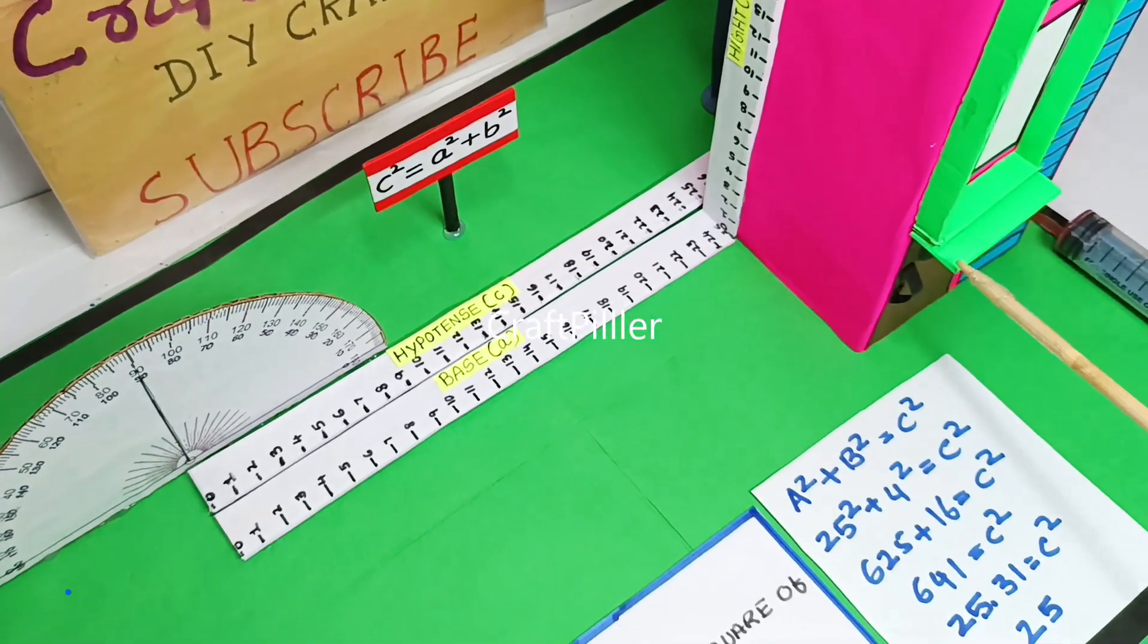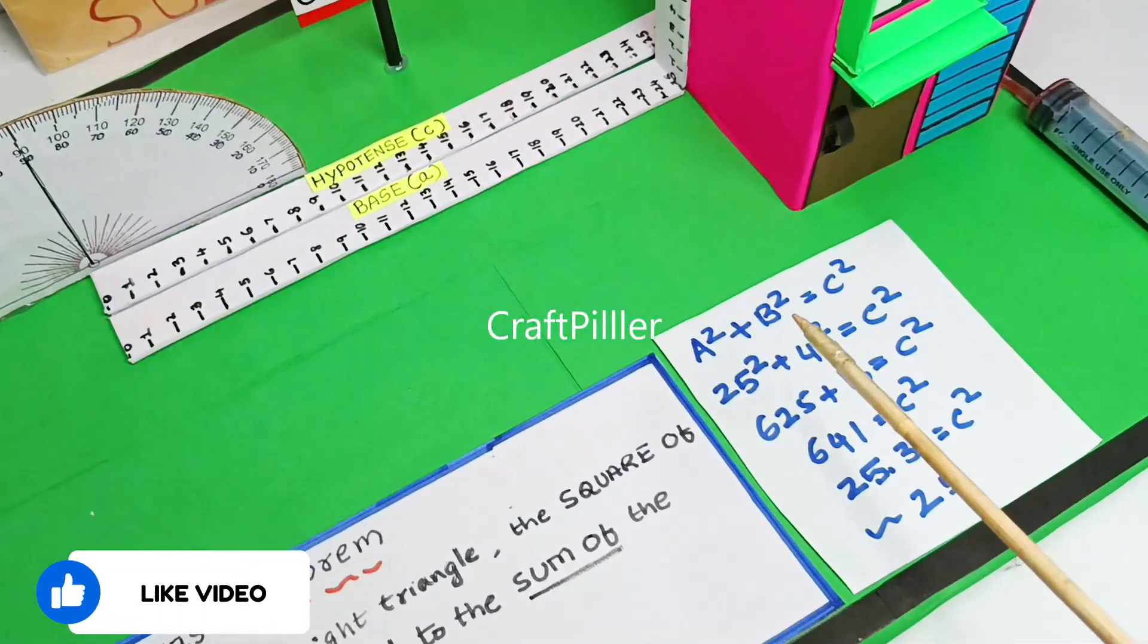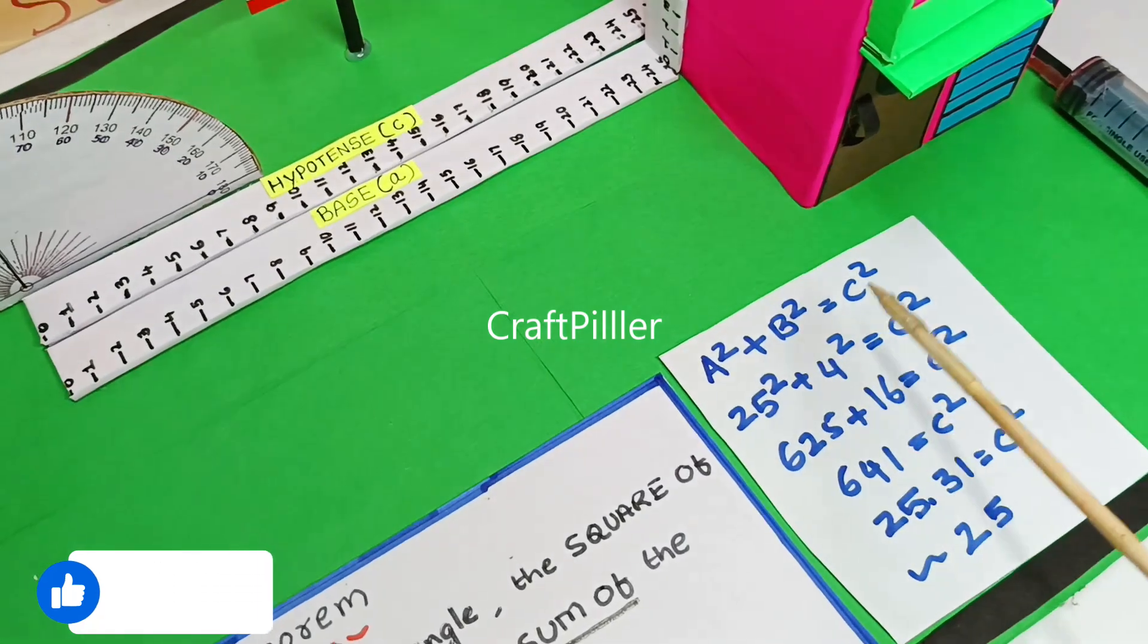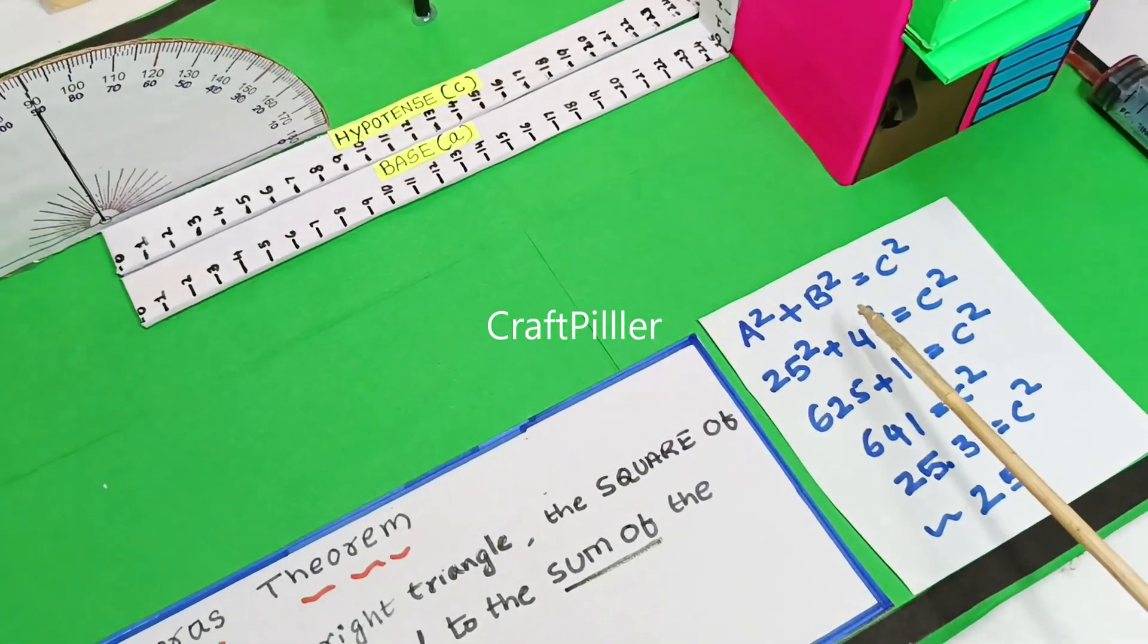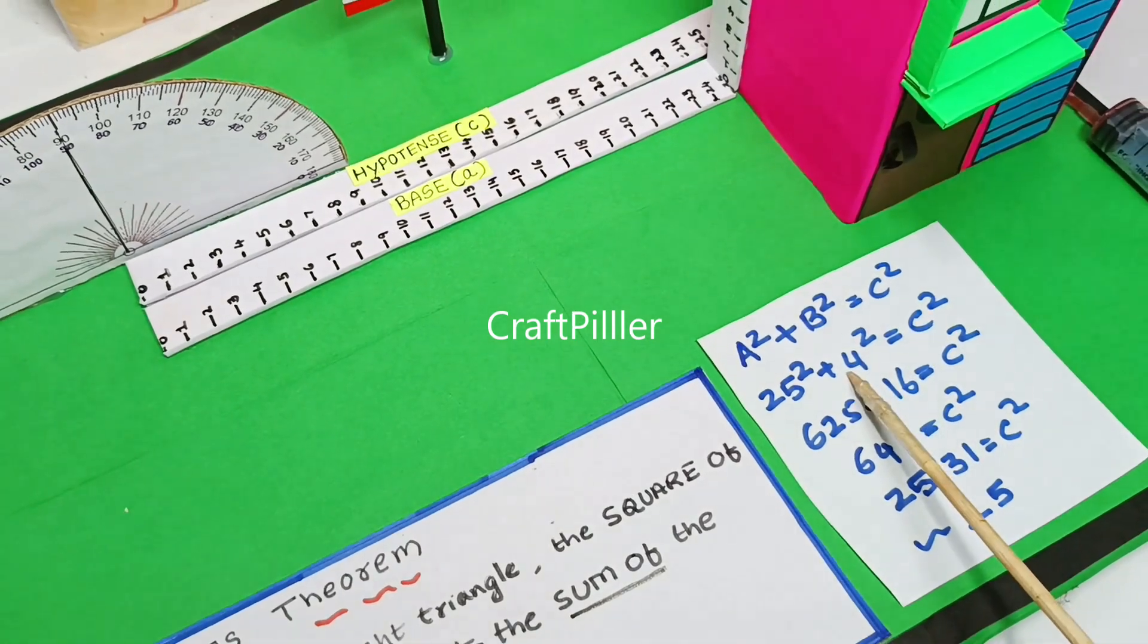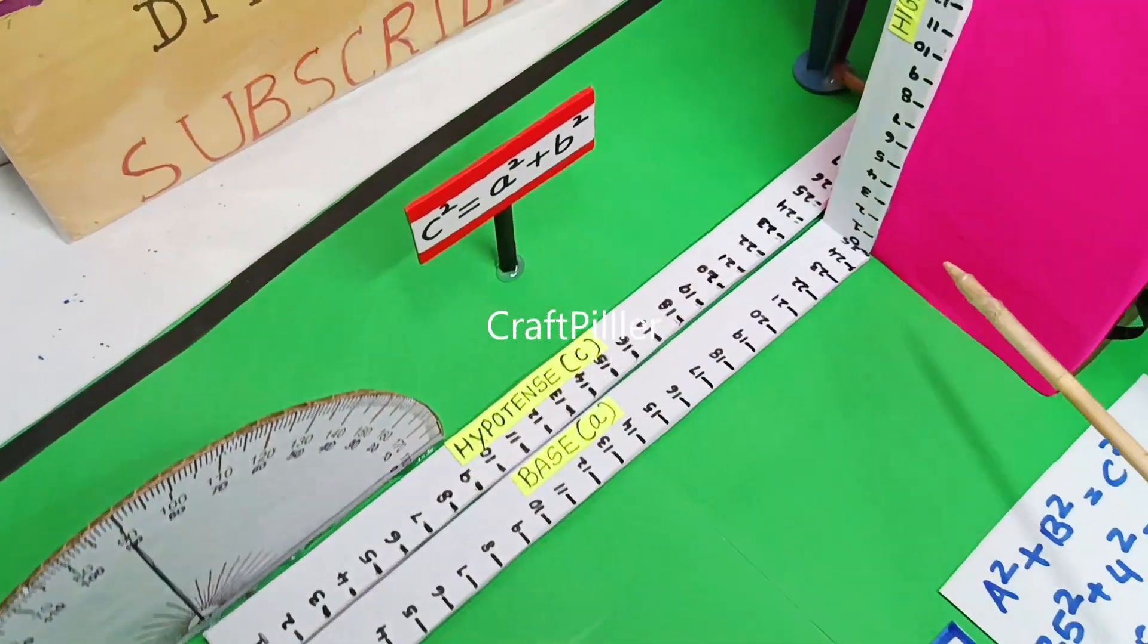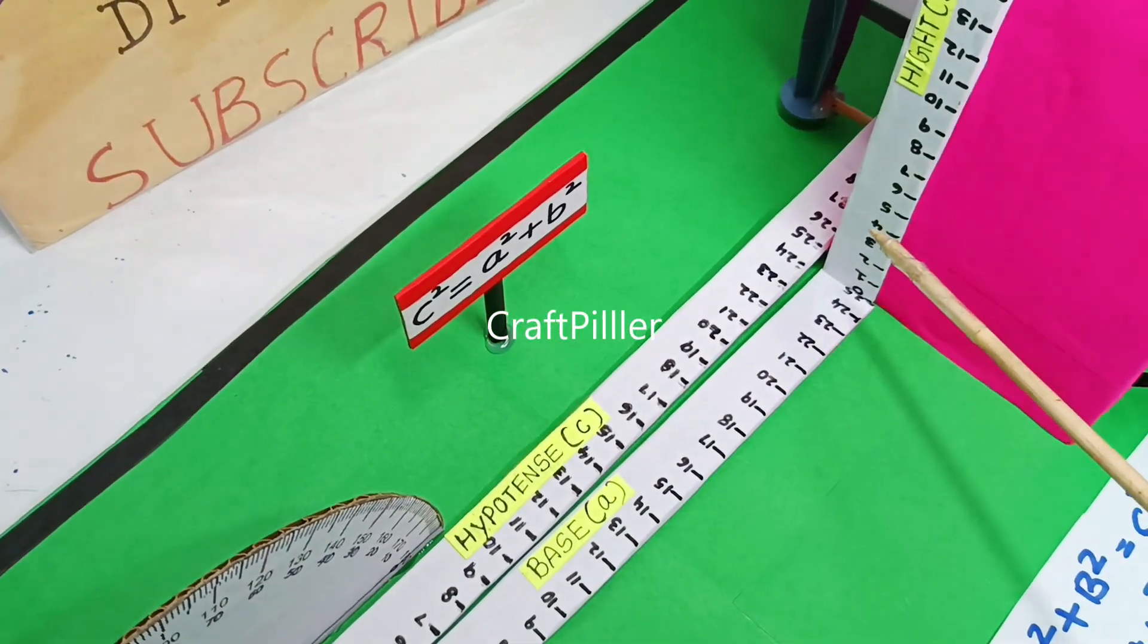We are going to demonstrate this now by considering an example of A square plus B square equals C square, with the base at 25 centimeters and B at 4 centimeters. Now we are trying to depict the height at 4 centimeters.